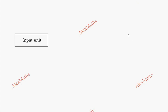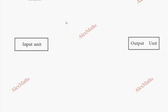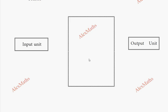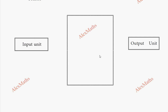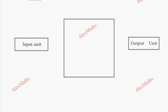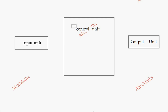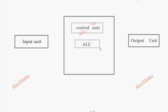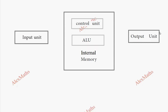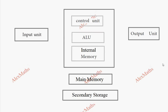Now, looking at the components diagram: starting with the input unit, then the output unit, and the central unit which is the central processing unit. The CPU has three components: the control unit, the arithmetic and logic unit, and the third component is memory — this is internal memory — and there is also secondary storage.